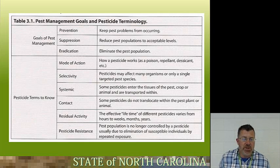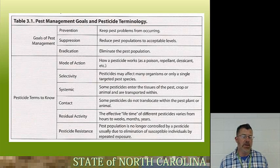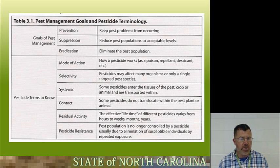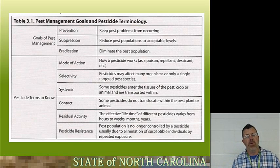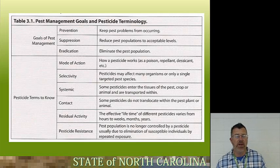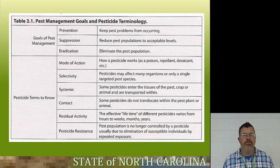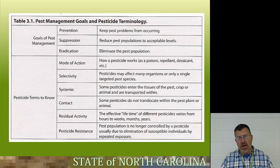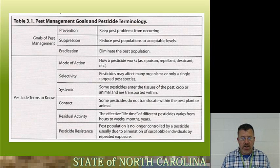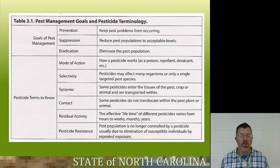Suppression: reduce pest populations to acceptable levels. Acceptable levels are going to be different for each situation. Eradication: we want to eliminate the pest population entirely — for example, in a food processing plant we don't want any vertebrates or invertebrates at all, so we're going to eradicate them.